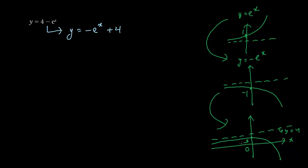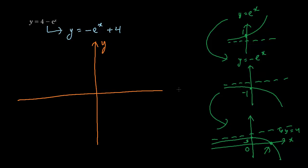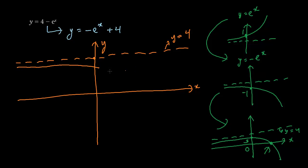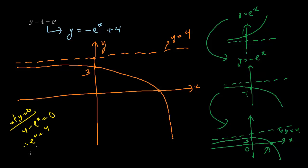We also need to find where it cuts the x-axis. The final sketch shows the y-axis, the x-axis, the asymptote y equals 4, and the reflected curve passing through 3 on the y-axis. At y equals 0: 4 minus e to the power x equals 0, therefore e to the power x equals 4, therefore x equals ln 4. This is where the curve cuts the x-axis, at ln 4.